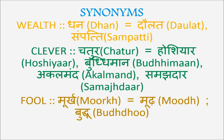Let's revise the slide: wealth is 'dhan,' 'daulat,' 'sampatti.' Clever is 'chatur,' 'hoshyaar,' 'buddhiman,' 'akalmand,' 'samajhdaar.' And fool is 'murkh,' 'buddhu,' 'moorh.'